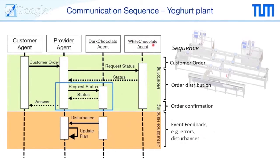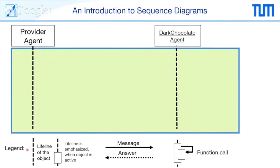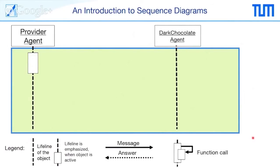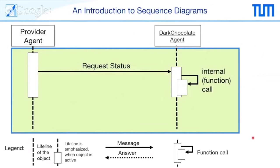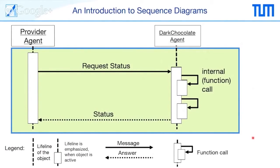We want to go into more depth. We have the provider agent and the dark chocolate agent, and we look at the symbols. A lifeline shows that a component is available, highlighted with a box when it is active. We have messages and answers sent between the two. Time runs from top to bottom. The provider agent requests the status from the dark chocolate agent — there will be an internal function call checking what function and status is available, possibly calling another sub-module, and then the status is sent back saying it is okay or not. This is the basic principle of the sequence diagram.